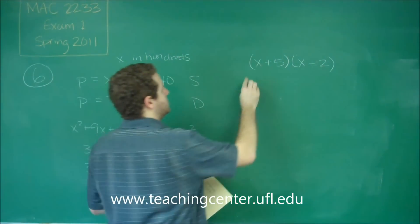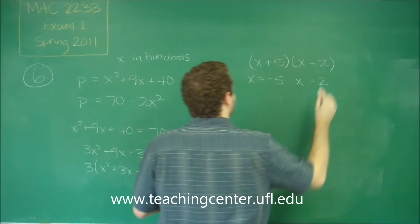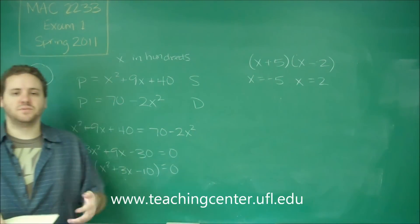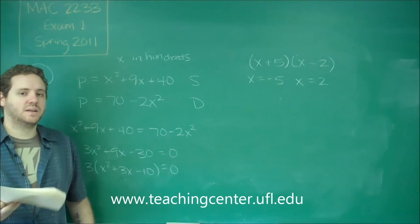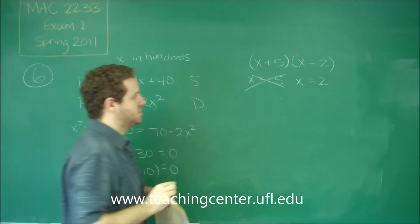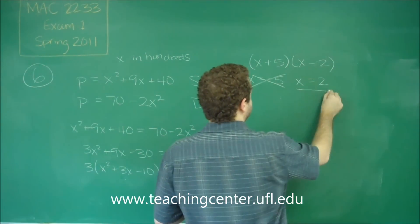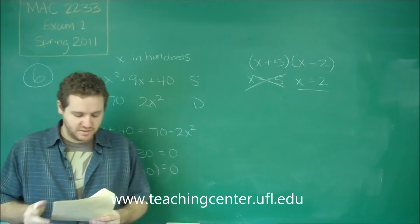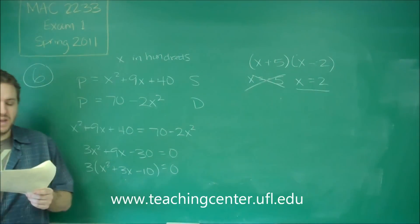So we have two solutions: x equals negative 5 and x equals 2. Obviously, since we're talking about real quantities of units and prices, x can never be a negative value, so x equals negative 5 is an extraneous solution. Our answer is x equals 2, which corresponds to 200 units because x was in hundreds. That only leaves answer choices A and B.